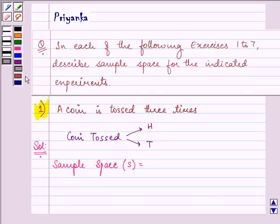So it is a possible outcome that in all the 3 tosses we will get head, or in all the 3 tosses we will get tail.